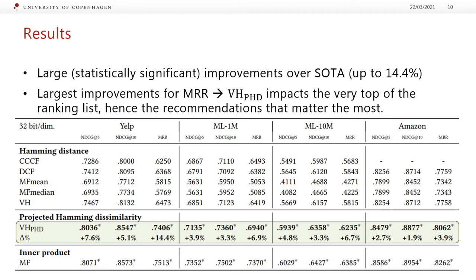Looking at results for 32 bits or 32 dimensions for the matrix factorization, compared to the binary embedding approaches, we observe statistically significant improvements over state-of-the-art of up to 14.4%. The largest improvements appear for MRR, which means our approach VHPHD impacts the very top of the ranking list — the recommendations that matter most to users. We also see that VHPHD achieves performance quite close to MF, tightening the gap between binary and real-valued approaches, though it doesn't fully match MF since 32 real-valued numbers encode more information than 32 bits.